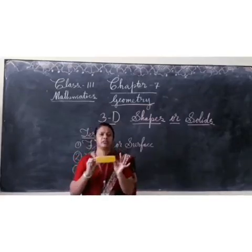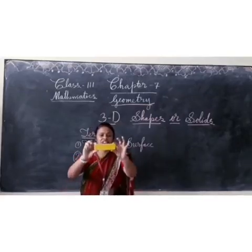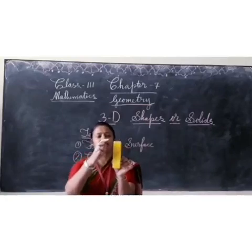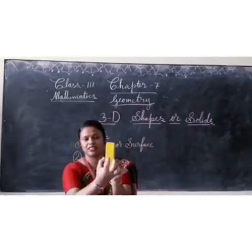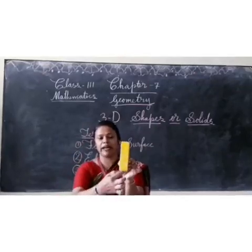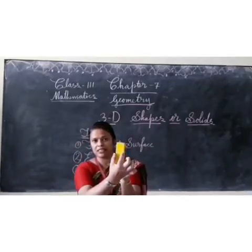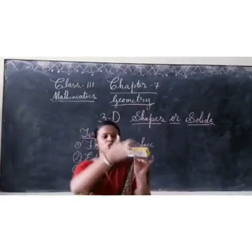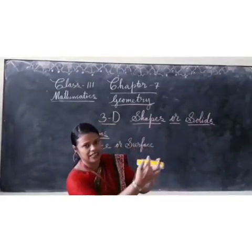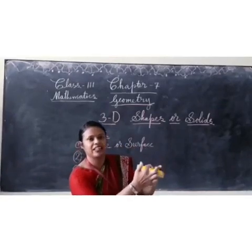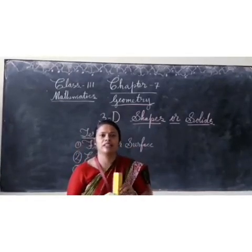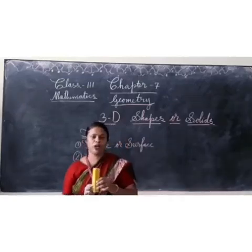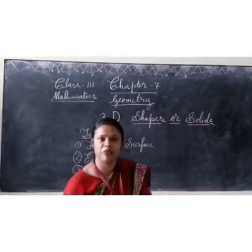The best example for 3D shapes is your duster. You can pick up the duster and see — it has length, width, and height. Length, width, and height — 3D shapes have got all three: length, width, and also height. I hope you have understood this.